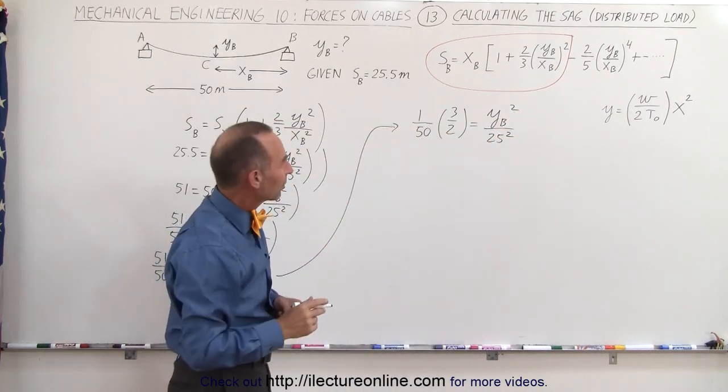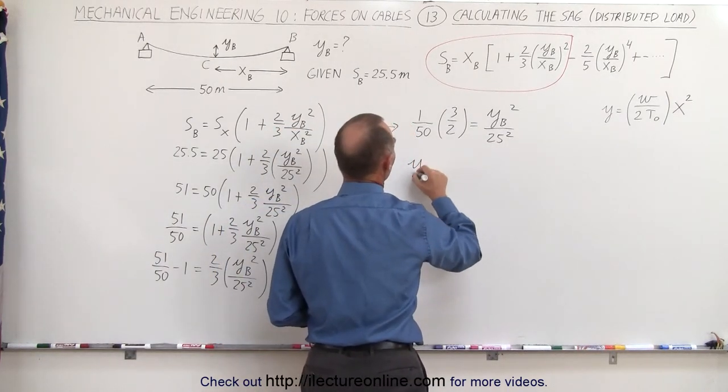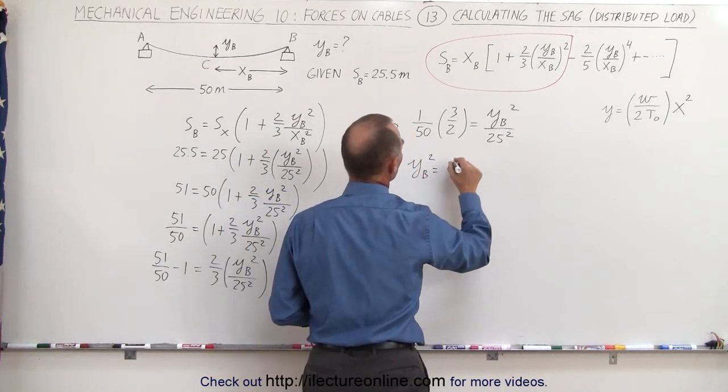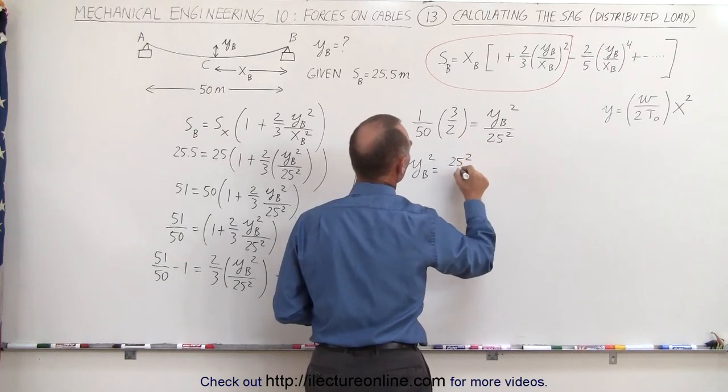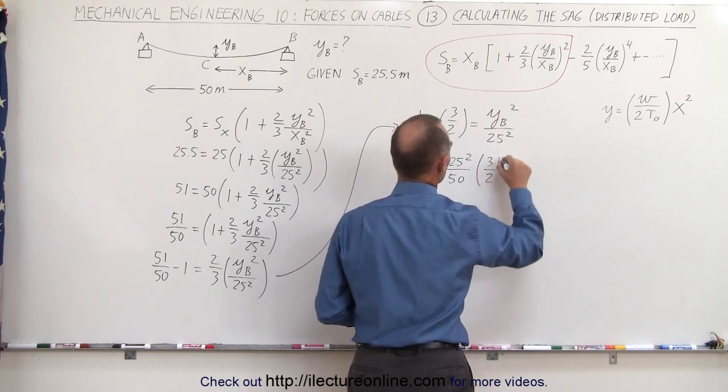And then turn the equation around and multiply on both sides by 25 squared. We end up with Y sub B squared is equal to 25 squared divided by 50 times three over two.